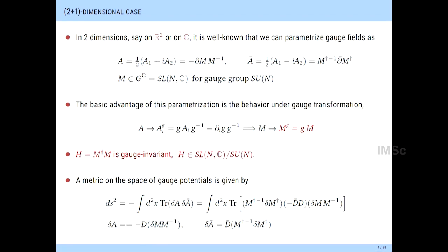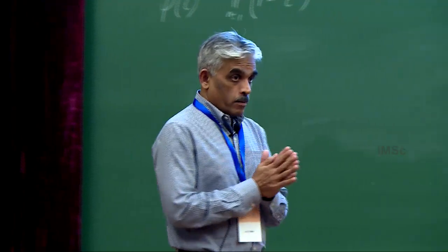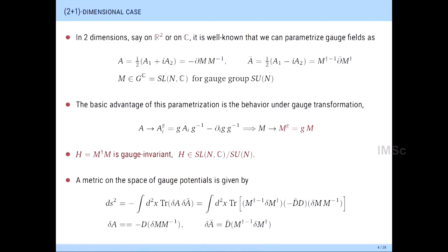If I take M-dagger M — which I call the matrix H because it's Hermitian — the G cancels out in the middle, making it a gauge invariant quantity. It parameterizes the space SL(N,C) mod SU(N), where your gauge invariant degrees of freedom lie. We need to know how to normalize the wave functions in the Hamiltonian picture, then we need the Hamiltonian, and then solve the Schrödinger equation. The technical difficulties can be overcome by using this parameterization.